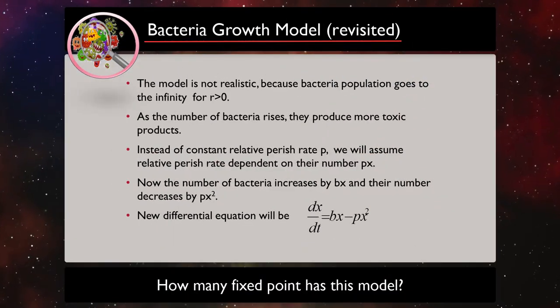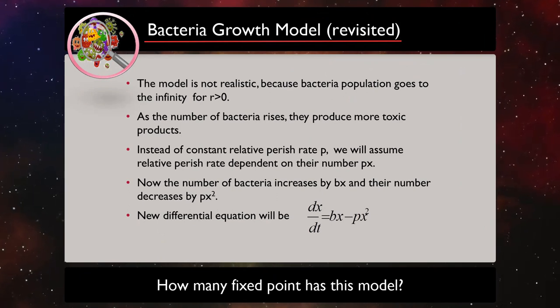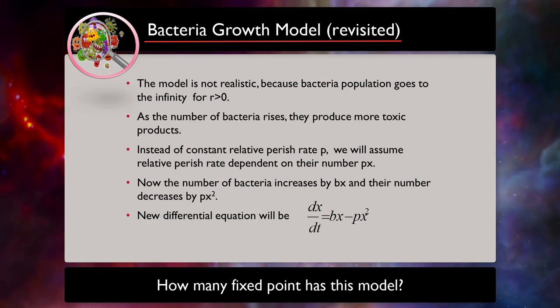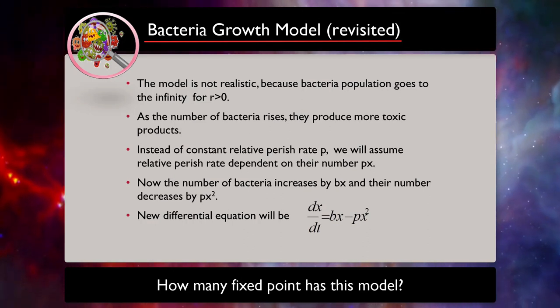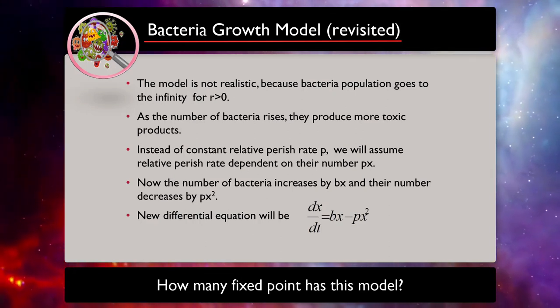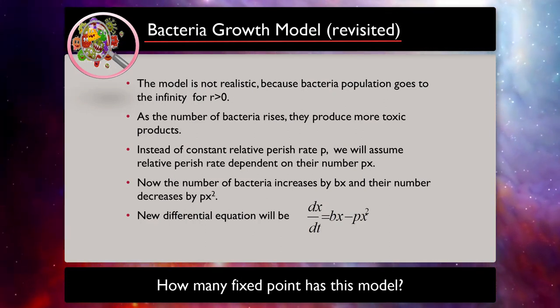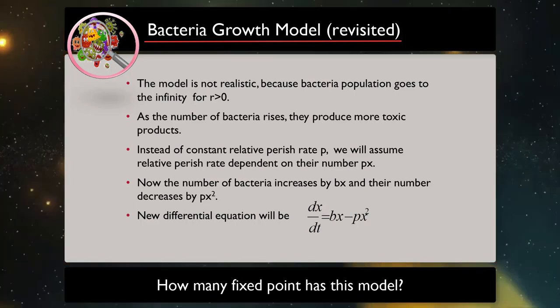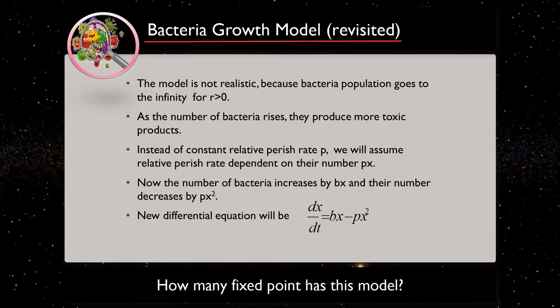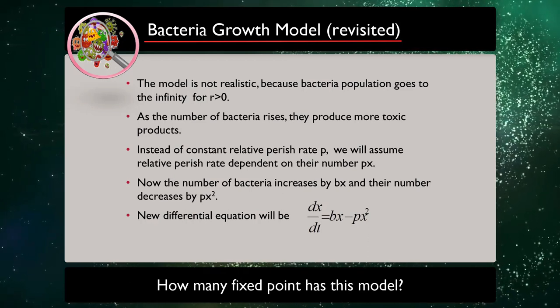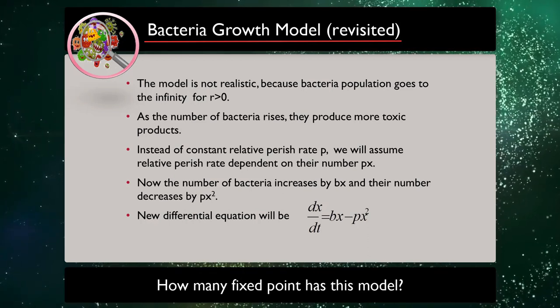No, the model is not realistic because bacteria population goes to infinity for R greater than 0. But in reality, as the number of bacteria rises, they produce more toxic products. So instead of constant relative perish rate p, we will assume relative perish rate dependence on their number, px. So the number of bacteria increases by bx and their number decreases by px squared. If we use and replace those in the previous equation, which we had, we get a new differential equation which describes the system.